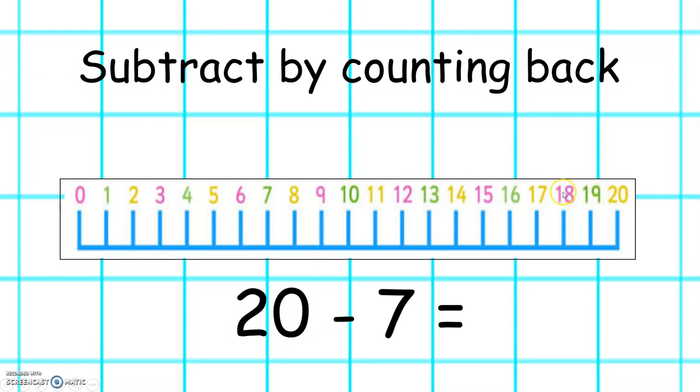1, 2, 3, 4, 5, 6, 7. The number that we land on is 13, so 20 take away 7 equals 13.